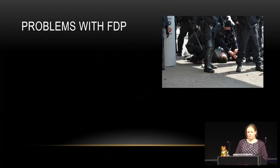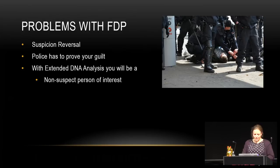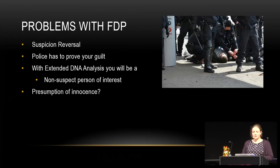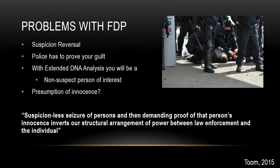There are deeper problems with forensic DNA phenotyping. The most important ethical problem is suspicion reversal. Police normally must prove you are guilty, but if you're a suspect based on your looks, you become a 'non-suspect person of interest' — connected to a crime without having done anything, and now you have to prove your innocence. Social scientist Victor Thom from Frankfurt said: 'suspicionless seizure of persons and then demanding proof of their innocence inverts our structural arrangement of power between law enforcement and the individual.'